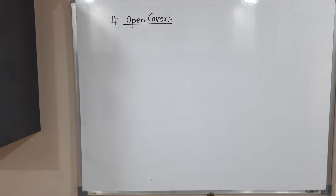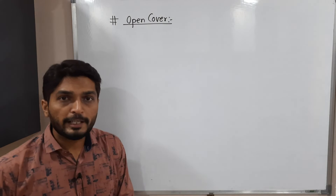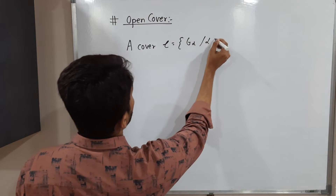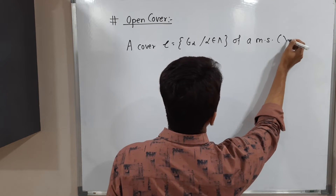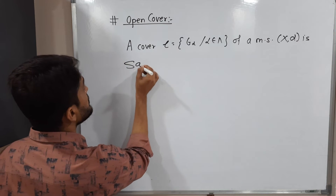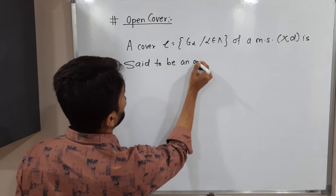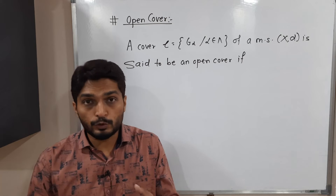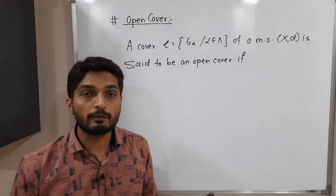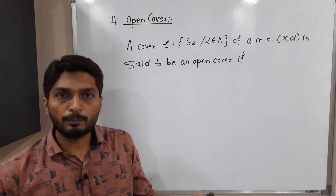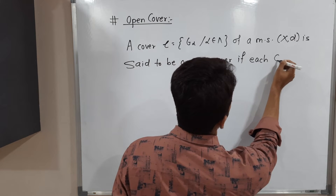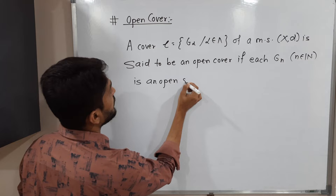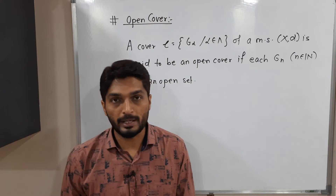The next concept is open cover. A cover, script C = {G_alpha, alpha belongs to lambda}, of a metric space X, D is said to be an open cover if each set G_alpha is an open set. When we say it is an open cover, basically we should have a cover, and if each G_alpha is an open set, then we call it an open cover.